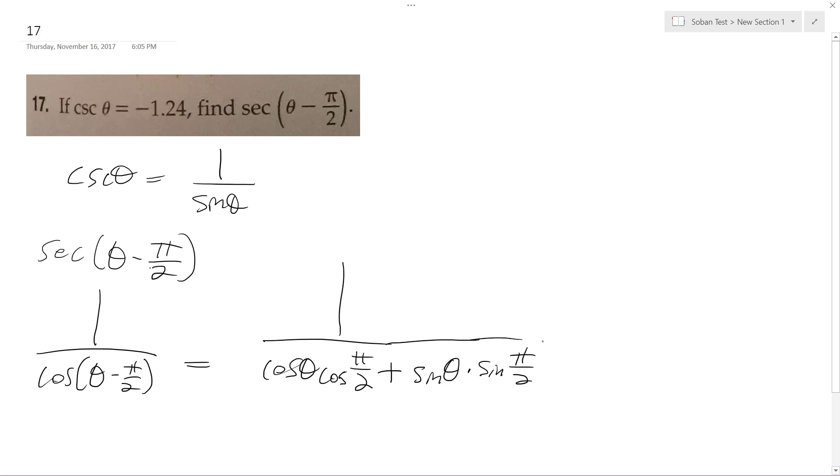So what I get is, cosine of pi over 2 is equal to 0, so cosine theta times 0 just cancels out, it doesn't matter what cosine theta is. And then plus sine of—they said cosecant of theta is equal to negative 1.24.